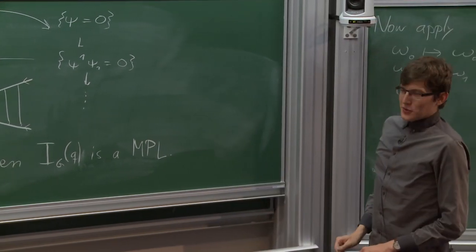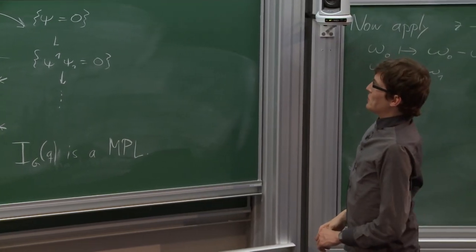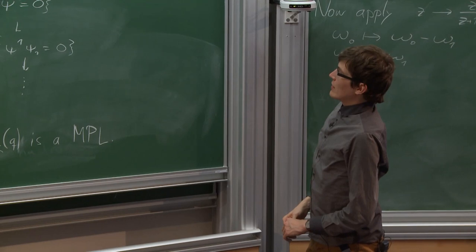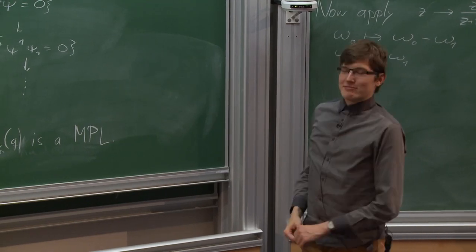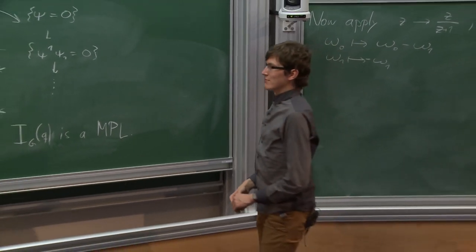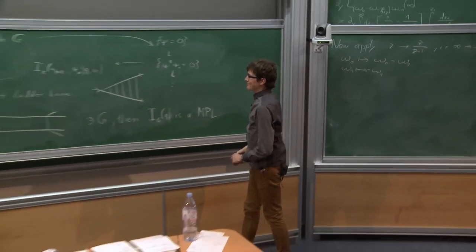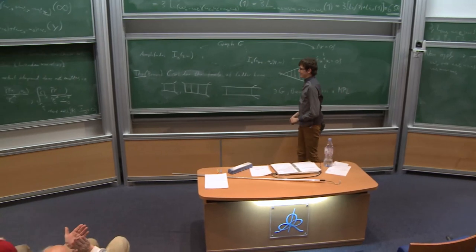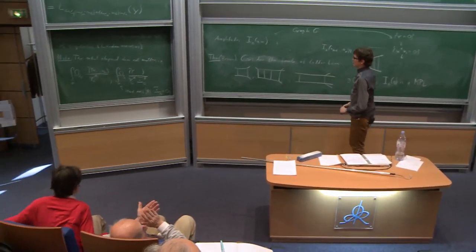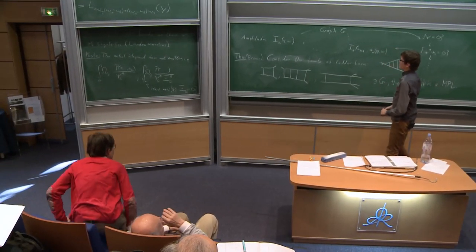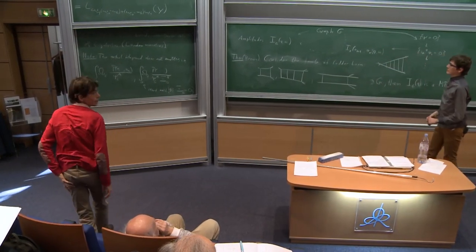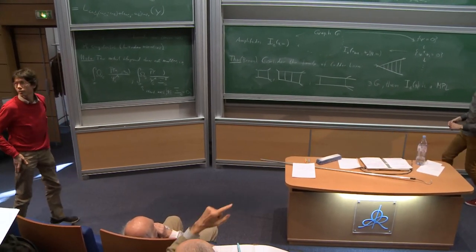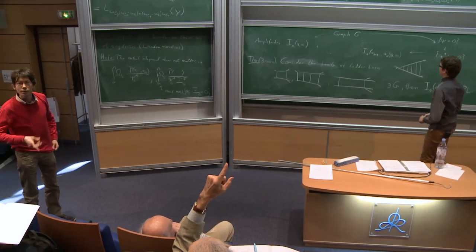There's another class: vertex-width-three graphs, which include graphs with three external vertices. Because these graphs have a very special combinatorial structure — they're very rigid — you can use this to prove factorization identities of Dodgson polynomials, which then tells you the actual amplitude is a multiple polylogarithm of a particular type. In practice, you can also use this for explicit computations. Thank you for your attention.